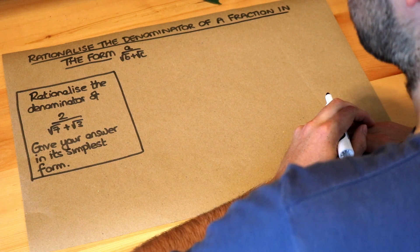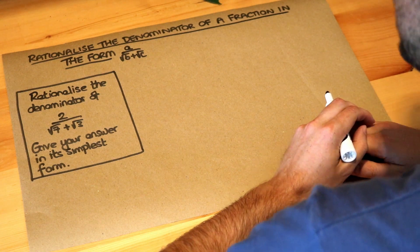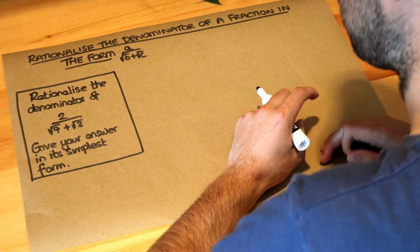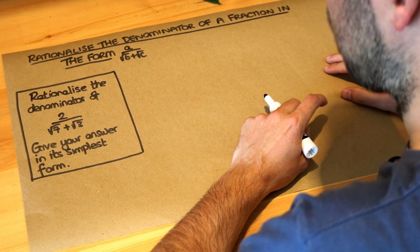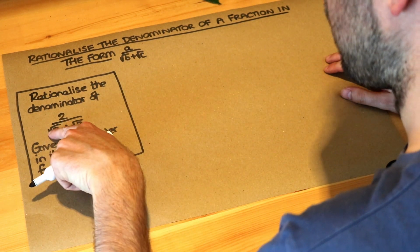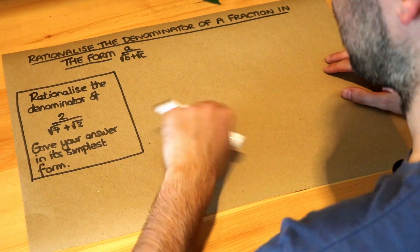Hello and welcome to this Dr. Ross video on rationalizing the denominator of a fraction in the form A over root B plus root C. So we want to rationalize the denominator of 2 over root 7 plus root 3, giving an answer in the simplest form.